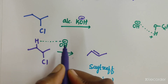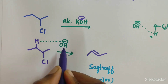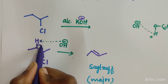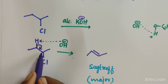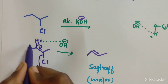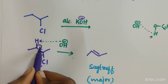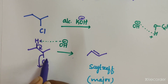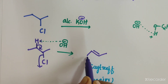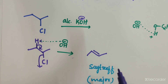In E2, the OH⁻ strong base abstracts the beta proton. The electrons shift toward the two carbon atoms, and removal of Cl⁻ takes place in a single step — all in one step. Hence we get the alkene product, which is called the Zaitsev product and is the major product.